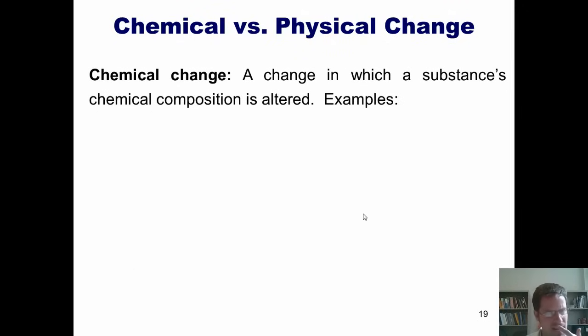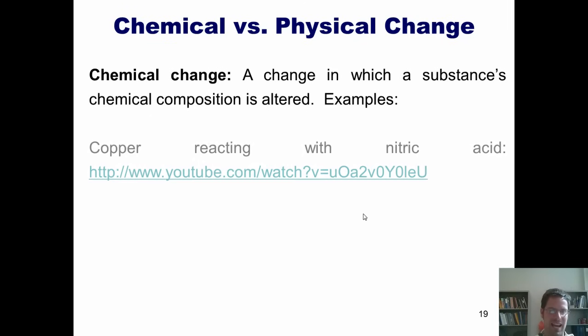This brings us to the next question. What is a chemical change? Well, a chemical change is a change in which a substance's chemical composition has been altered. One example is when we react a copper penny with nitric acid.